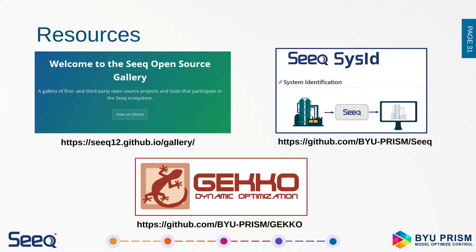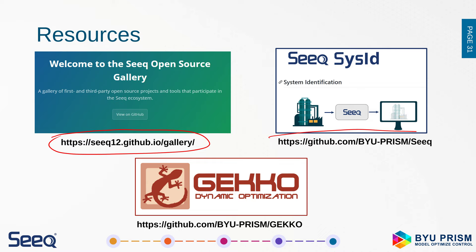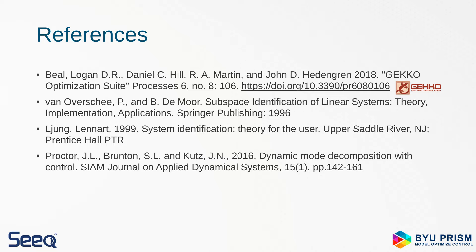Here are some resources. The tool is freely available from GitHub, along with the source code. The Gekko package is also freely available. All of these are Python packages that run through a Jupyter notebook. There are also references for the subspace identification literature and the Gekko package. Thank you for your attention — we'll be glad to answer any questions.